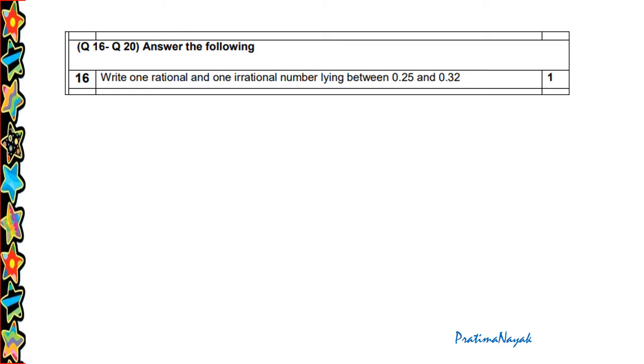Next question 16 to 20, it is short answer question. Question number 16: Write one rational and one irrational number between 0.25 and 0.32. Both are standard paper but it is very easy question from class 9 only. So rational number is terminating, so it will be 0.26. And irrational number, 0.272727272727 and of course you must put the dot because it is non-terminating, non-repeating.